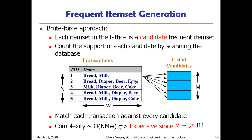In the brute force approach, each item set in the lattice is a candidate frequent item set. We need to count the support of each candidate by scanning the database, then list the candidates having minimum support. This is very complex — the complexity is of the order O(N × M × W), where N is the number of transactions, W is the width (number of items per transaction), and M is the number of candidates, which equals 2^D.